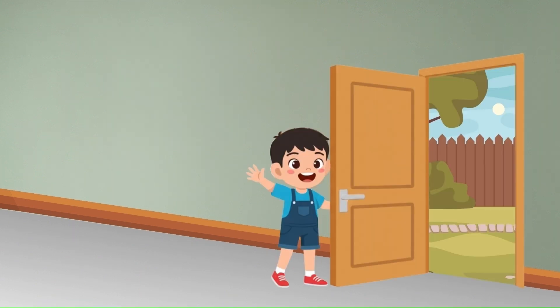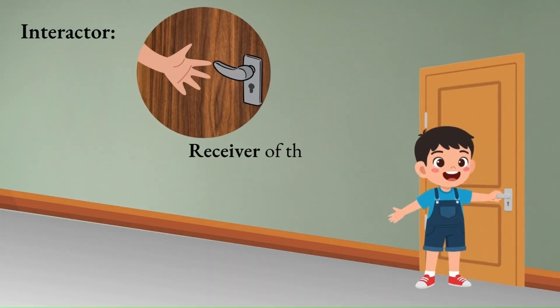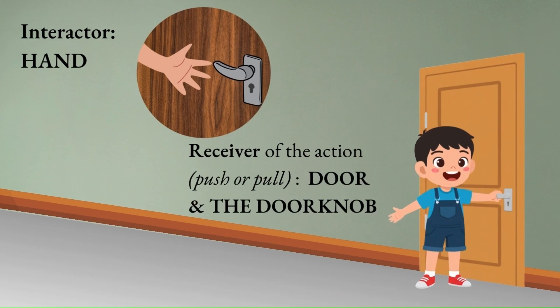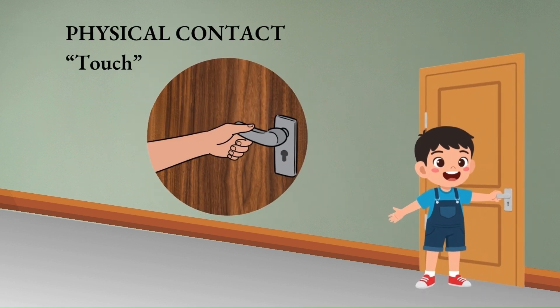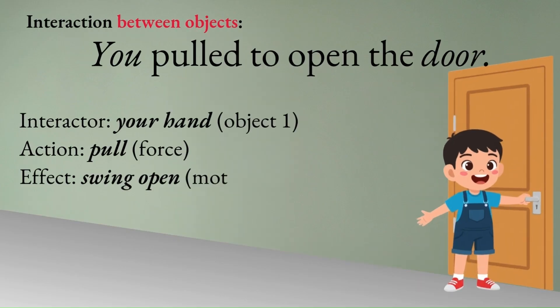Force, as you have already known, is an action. It is a push or a pull. And by saying that it is a push or pull, we mean there are objects interacting. For example, opening the door. The one that does the action — the interactor — is your hand, because that's the part of you that has direct contact with the doorknob, which is a part of the door since the doorknob is attached to it. The action is the pull, and that's the effect of the exerted force.